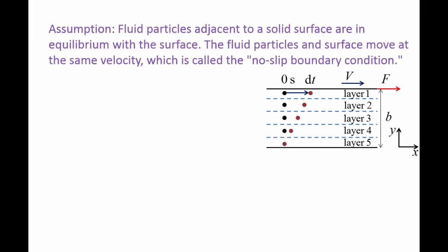This is because fluid particles adjacent to a solid surface are in equilibrium with that surface. This equilibrium condition is called the no-slip boundary condition. The fluid between the top and bottom layers obtain velocities between 0 and v as they are dragged by adjacent layers.